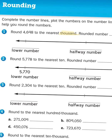One thousand is a one with three zeros behind it. So that's good to know. The number we're looking at here, 4,698 — it has four digits in its place value. We have a 4, a 6, a 9, and an 8.